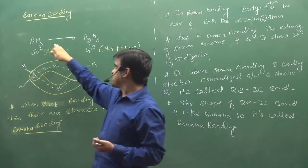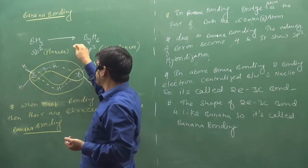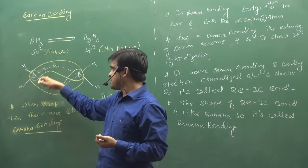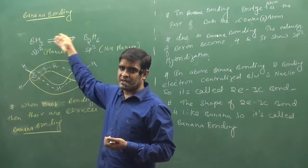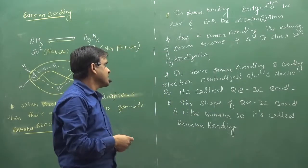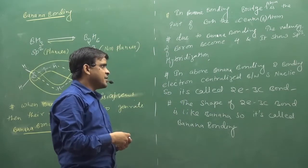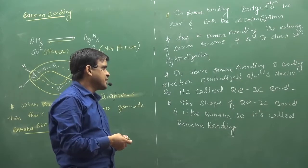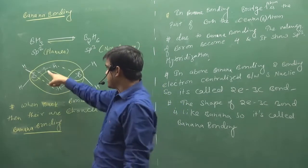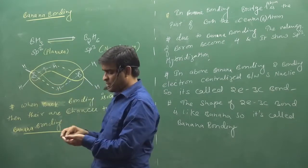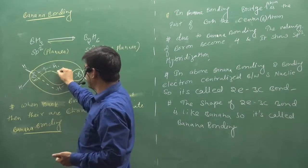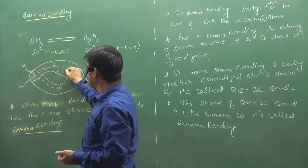This is a process of polymerization - it is reversible. In banana bonding, two bonding electrons are centralized between three nuclei. These are two electrons. What are these nuclei? One is this nucleus, one is this nucleus, and one is this nucleus. So: one, two, three - three atoms, three nuclei.